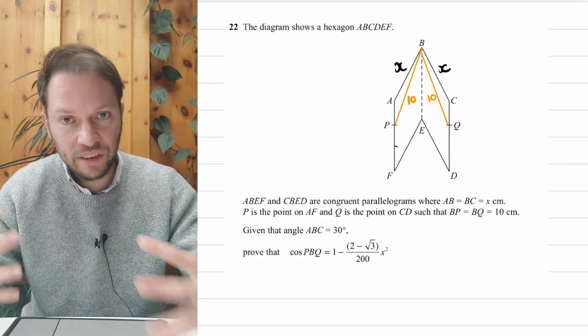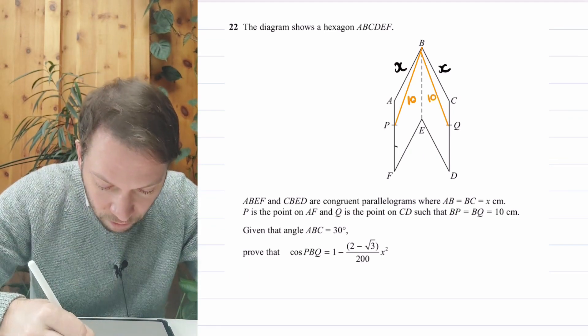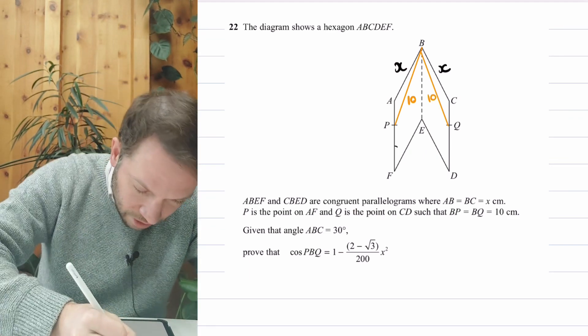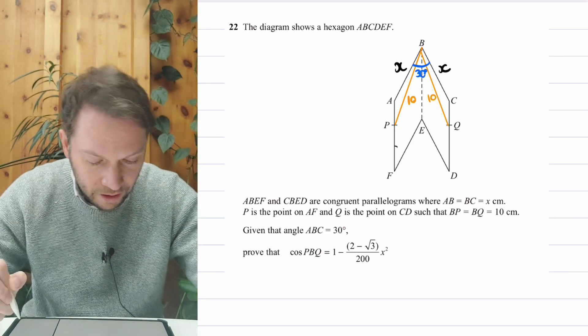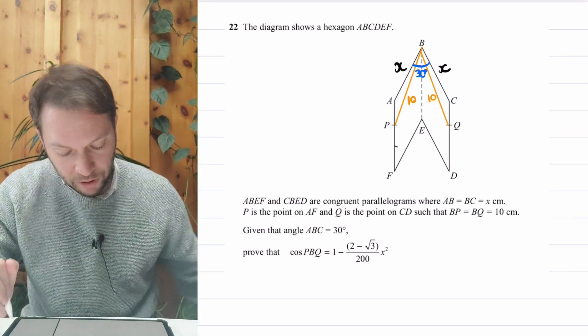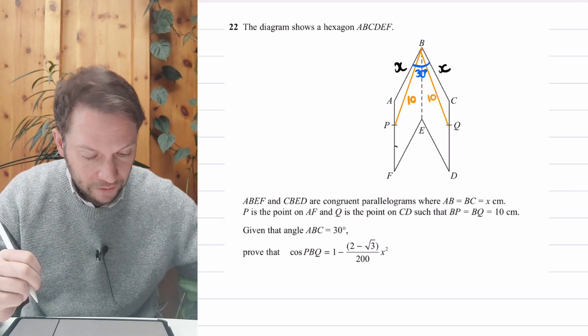We're also given that the angle ABC is 30 degrees. So I'm going to put that in here. So it's that whole angle ABC. And we need to prove that cos of the angle PBQ is this complicated expression we have there.